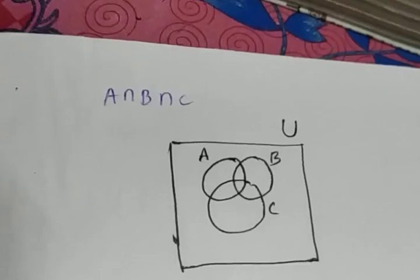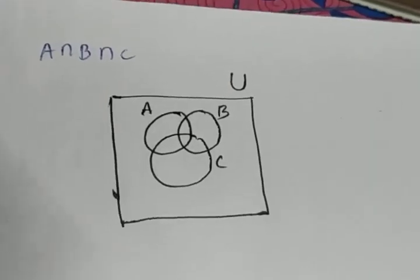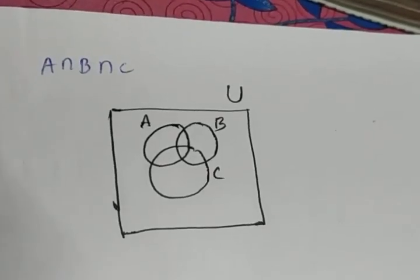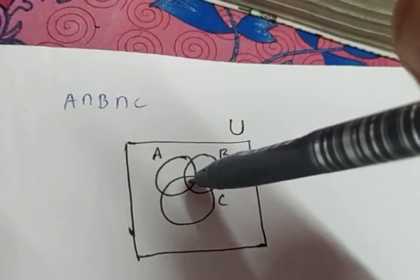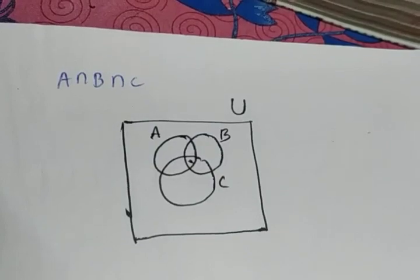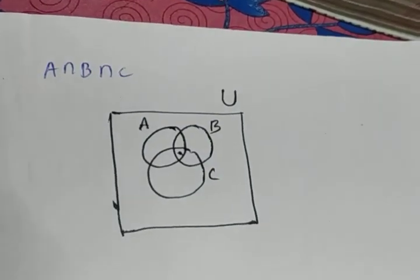Can you say which is A intersection B intersection C? A intersection B intersection C must be common for all A, B and C. Then can you identify this will be the region. This dotted region will be the region common for all the sets A, B and C.